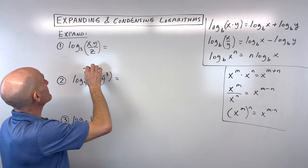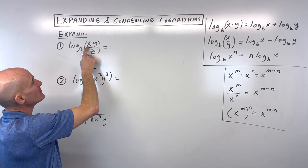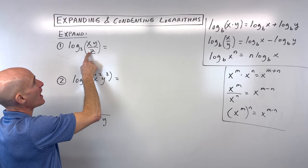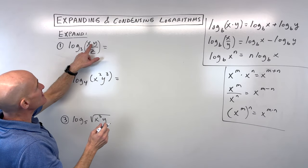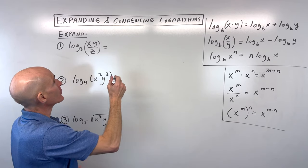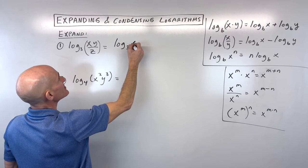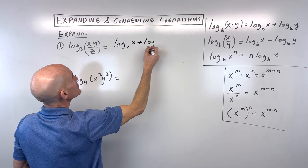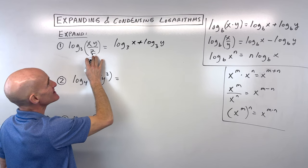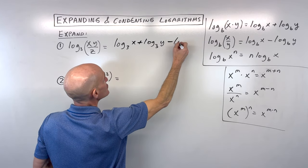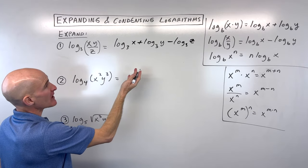Let's dive into some examples, starting with expanding. If we want to expand log base 3 of x times y divided by z — the x and y are next to each other, meaning they're multiplied together, so we write them as a sum: log base 3 of x plus log base 3 of y. Then we're dividing by z, so we subtract: minus log base 3 of z. That's fully expanded.